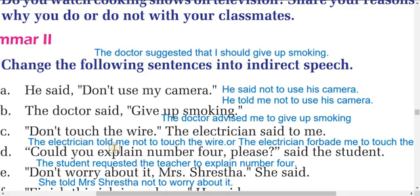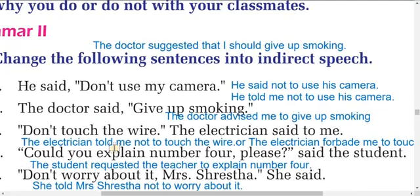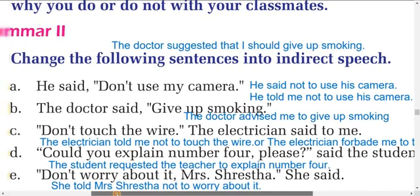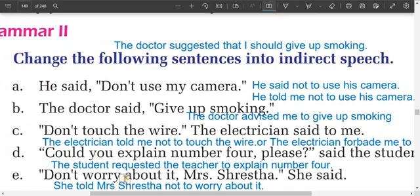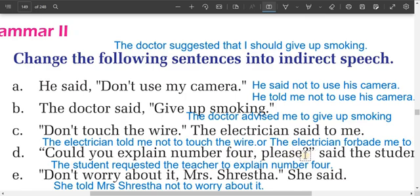D: 'Could you explain number four, please?' In indirect speech: the student requested the teacher to explain number four. When the word 'please' is present, we use 'requested' in the reporting verb.